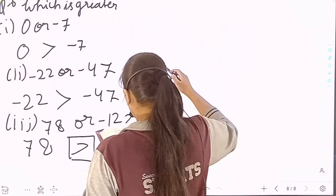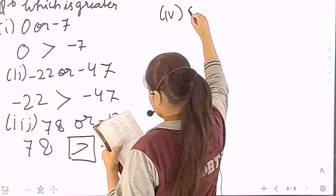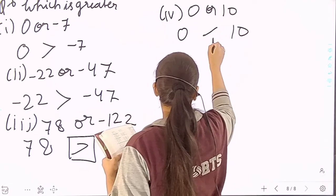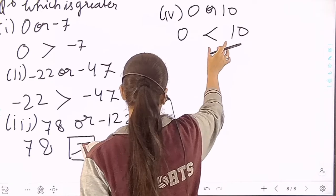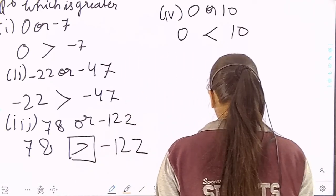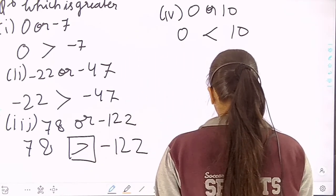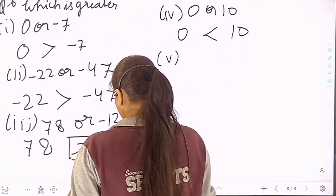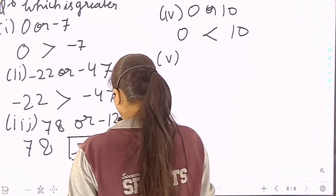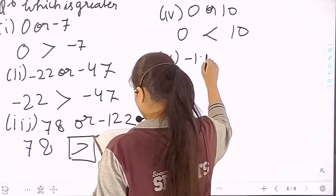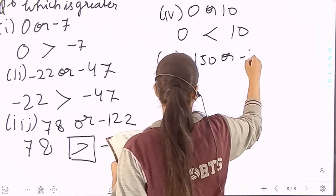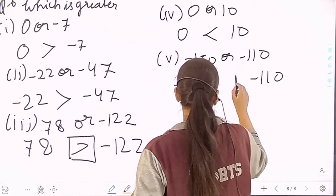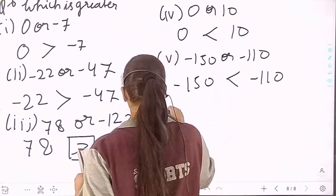Fourth part: which is greater, 0 or 10? The answer is 10, because 0 is less than every positive integer. Fifth part: which is greater, minus 150 or minus 110? Minus 110 is greater.